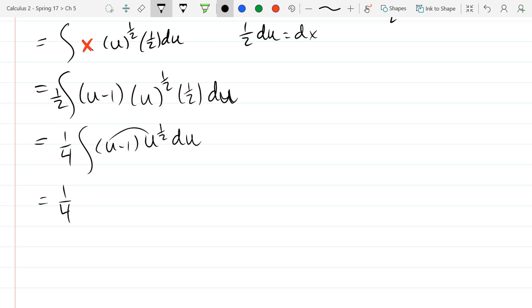So I'm going to distribute right here, the square root u into the u minus 1. So we get u times u to the half minus u to the 1 half du. And u to the first times u to the 1 half, that's u to the 3 halves power.